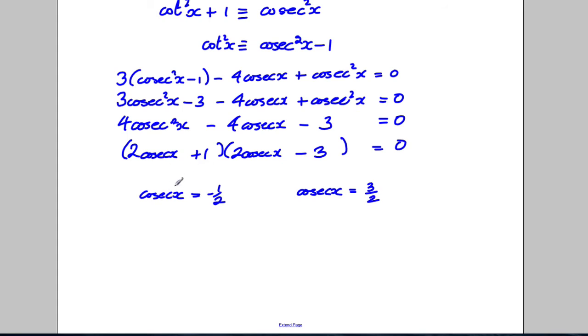Cosec is 1 over sine. So, if 1 over sine is negative 1 half, then sine x must be equal to negative 2. And in this case, sine x must equal 2 thirds. I ignore this one because sine can never be less than negative 1. It's always between 1 and negative 1. So, there are no solutions from here. And this one is where I get my solutions.